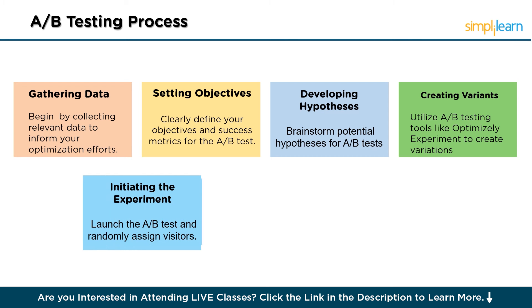The next step is initiating the experiment. Once your variants are ready, launch the A-B test and randomly assign visitors to either the original or modified experience. Monitor their interactions and behavior throughout the experiment to determine which version performs better. By randomly allocating visitors, you ensure that your results are statistically significant and accurately reflect the impact of the changes made.